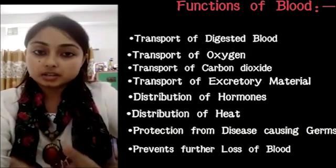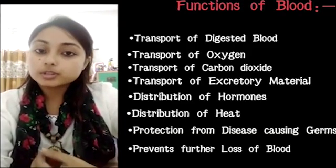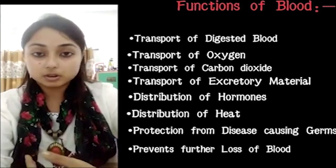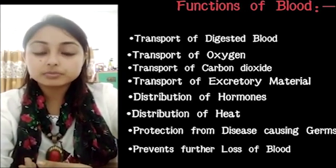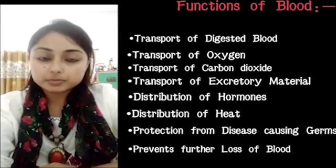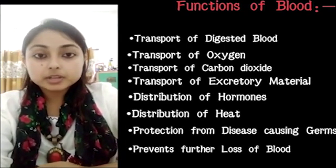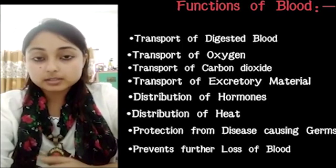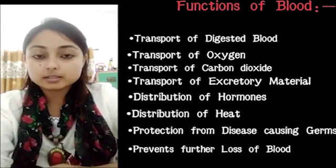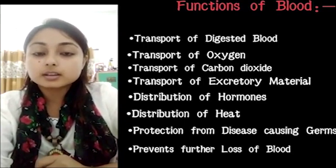Blood helps in the transport of oxygen from the lungs to the tissues. The cells responsible for this are the red blood cells or RBC. The common scientific term for RBC or red blood cells is erythrocyte — please note it down. Erythrocyte.